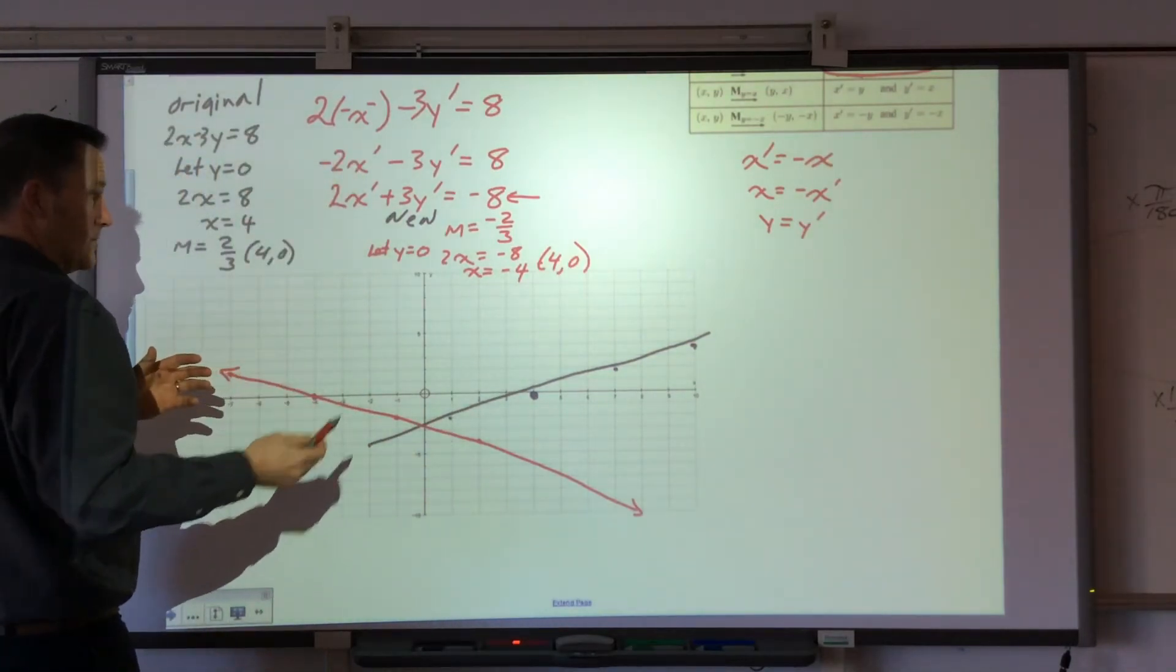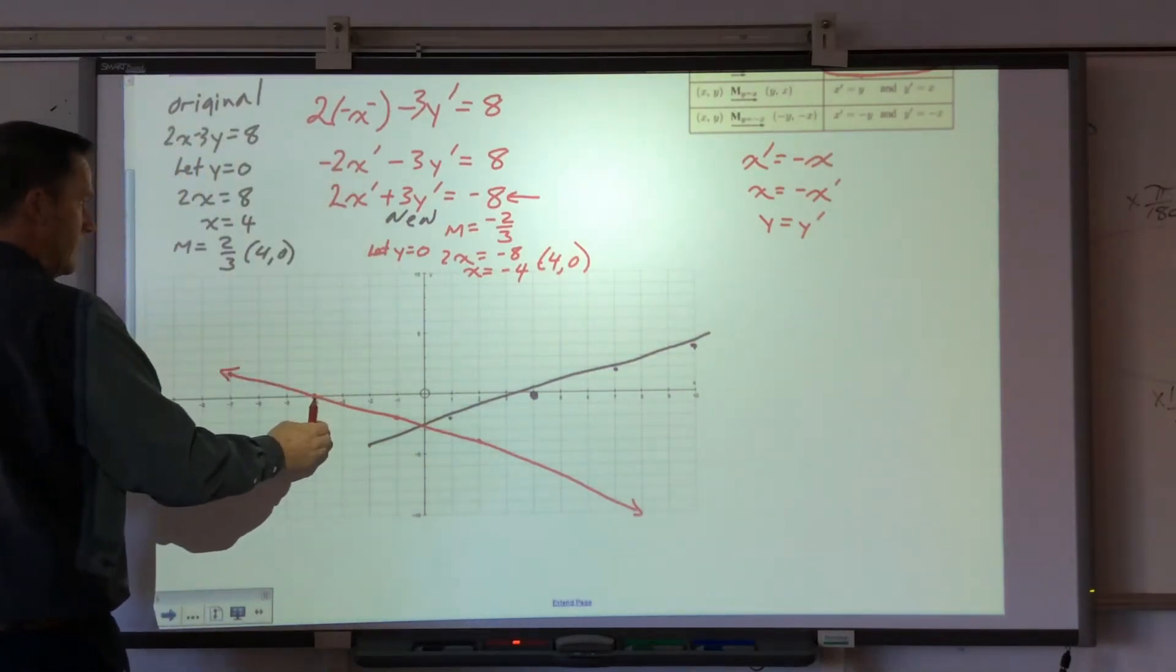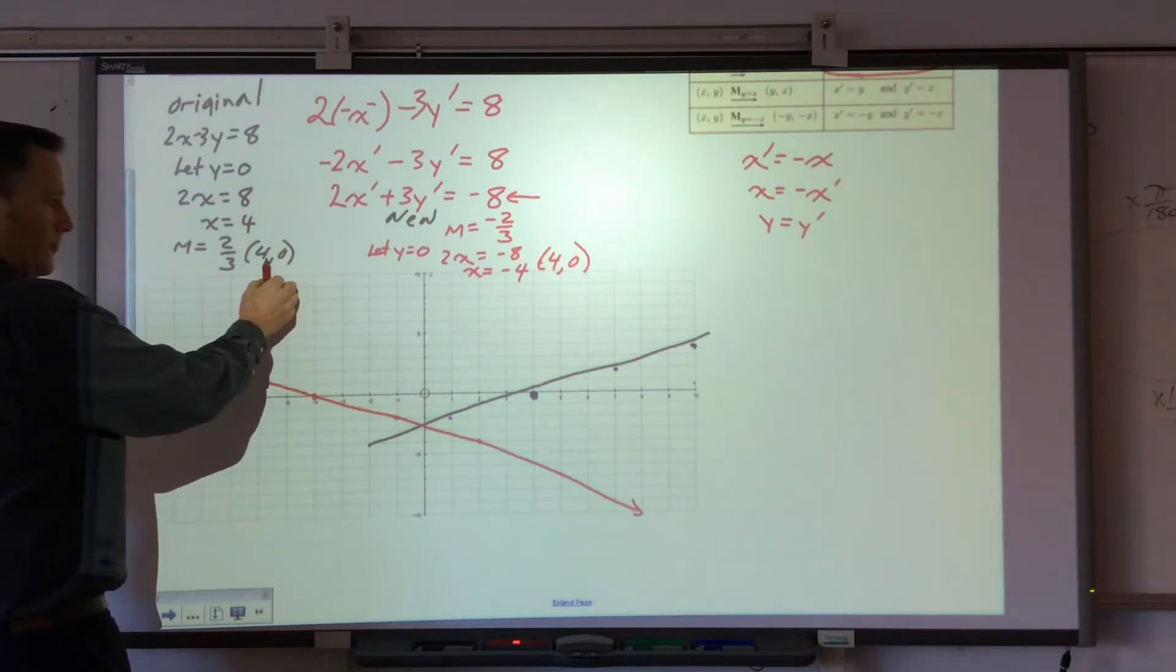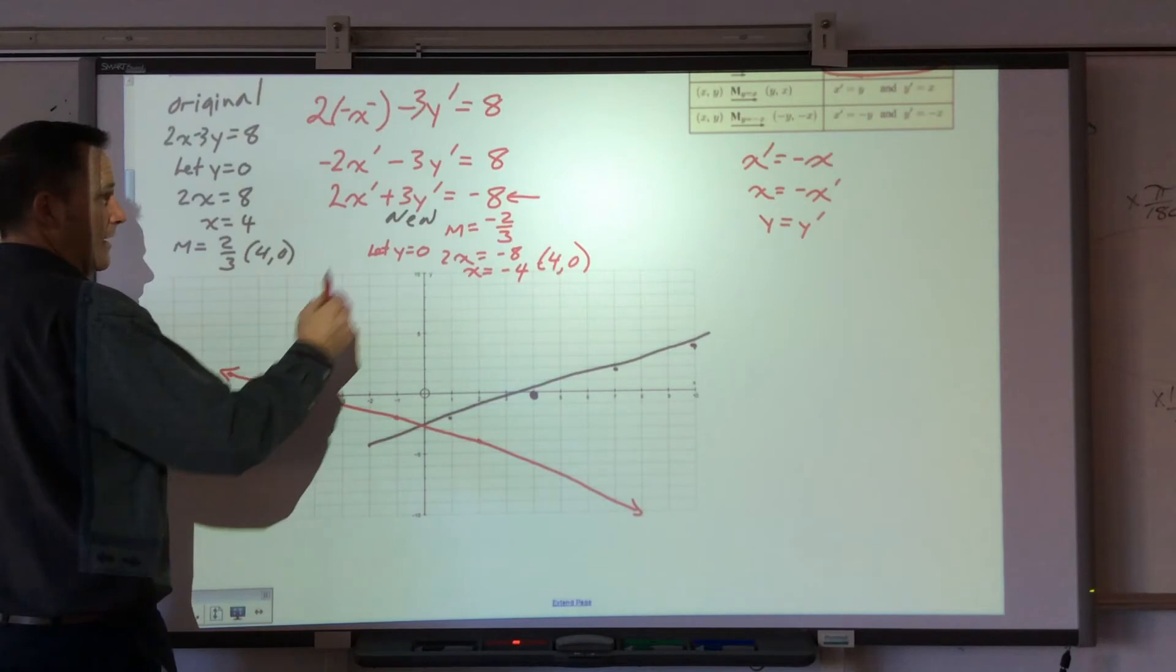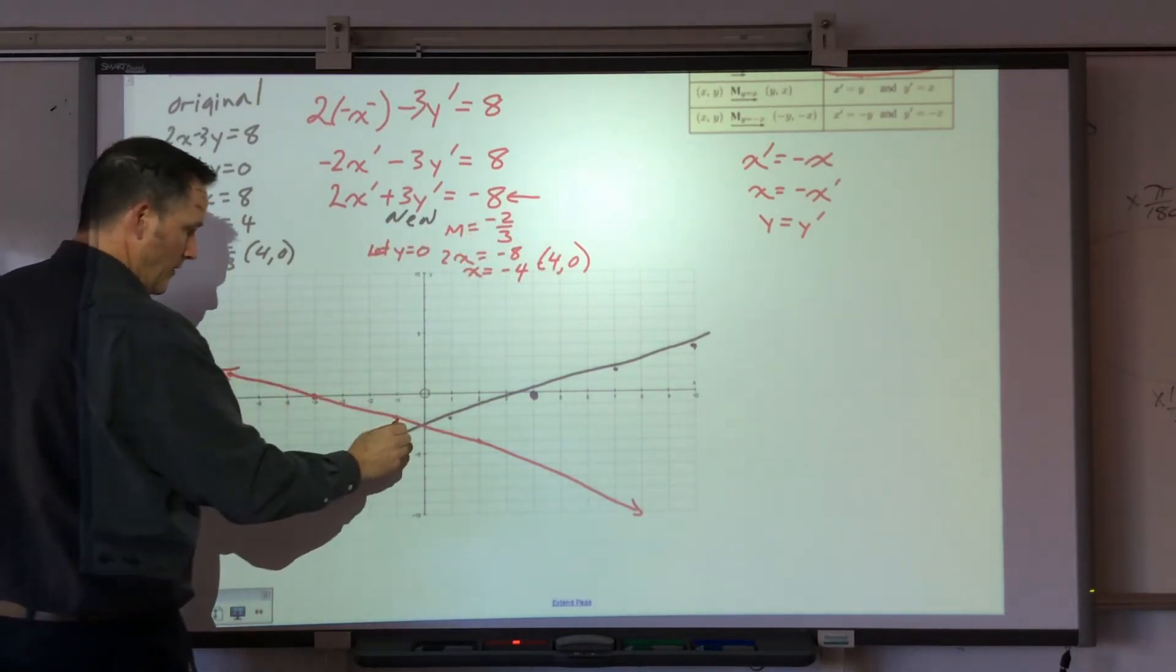Start plotting the points. Negative 4 and 0 happens to be the mirror image of 4 and 0. So I'm here, and I use a slope negative 2 over 3, down 2 over 3.